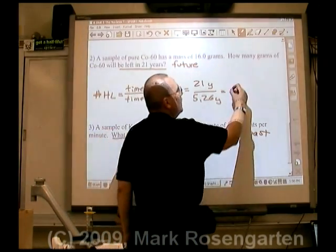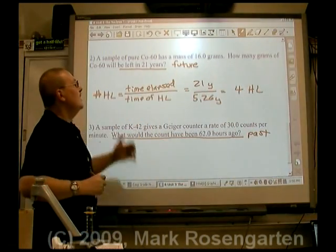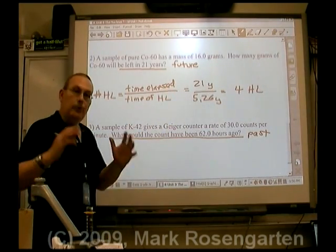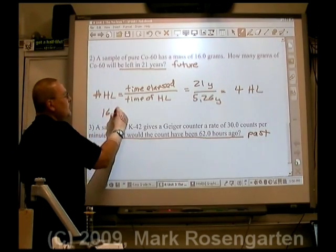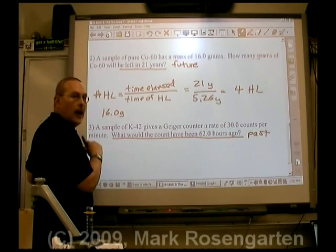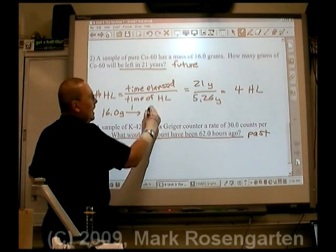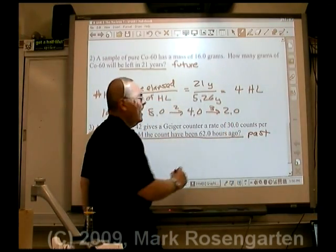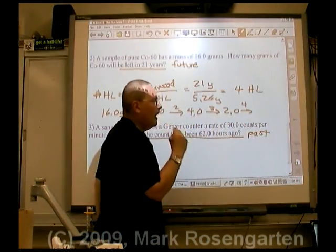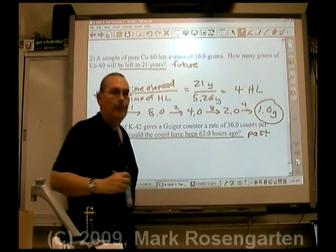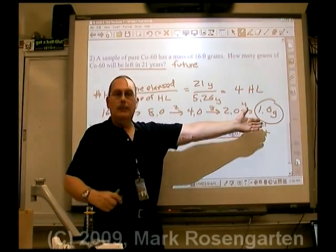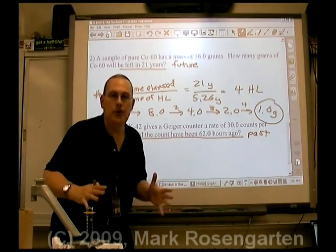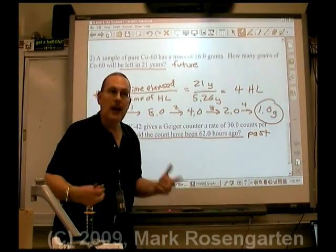21 divided by 5.26 is four half-lives — it undergoes four half-lives going into the future. We've got 16.0 grams now, and we'll cut it in half four times: 8.0, then 4.0, then 2.0, then 1.0 gram remaining. We started with 16 grams, so 1 gram is still cobalt-60. What about the other 15 grams? They're the daughter nuclide — the isotope changed into a new element, so the remaining 15 grams is that new element.